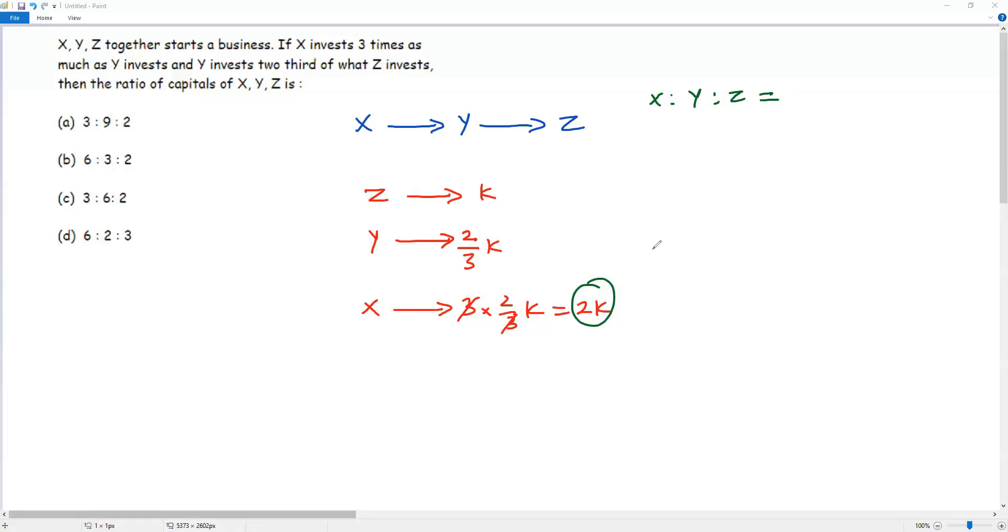So the investment of X is 2K. Then investment of Y is two-third of K. The investment of Z is just K.